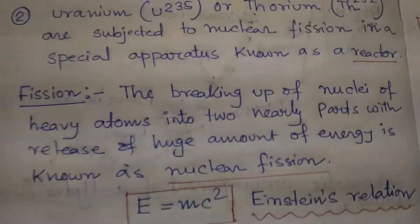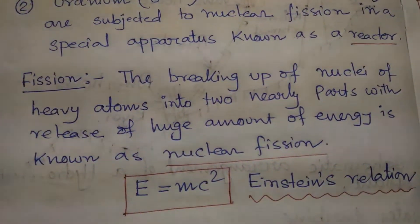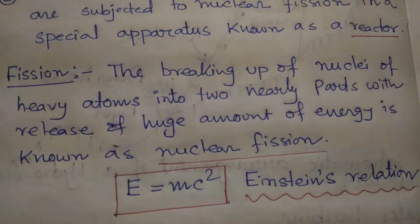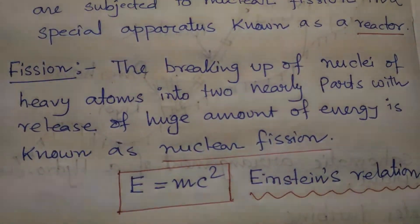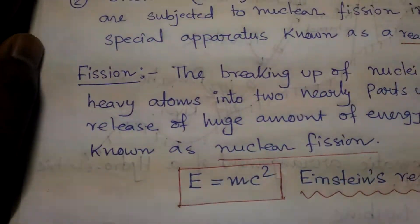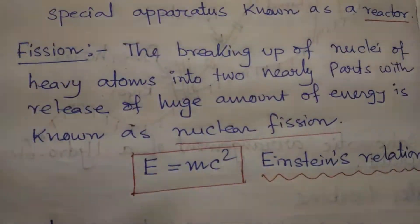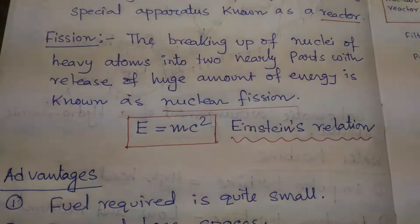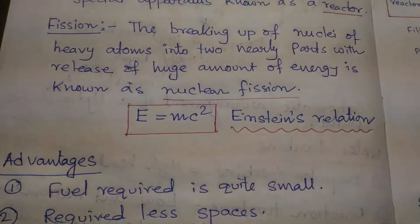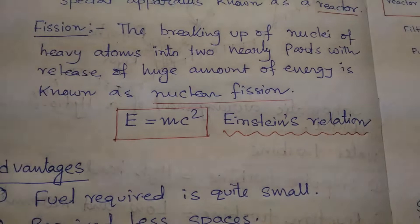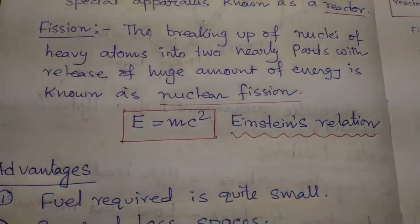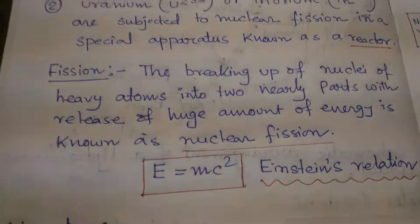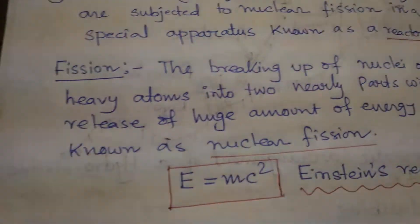What is fission? Fission is the breaking up of nuclei of a heavy atom into nearly equal parts with the release of a huge amount of energy — this is known as Nuclear Fission. By help of the Einstein relation E = mc², fission is utilized for the nuclear power station.